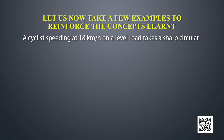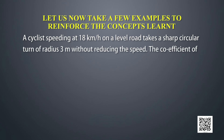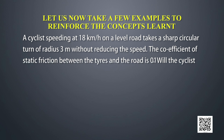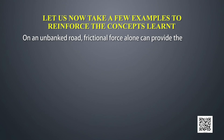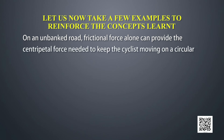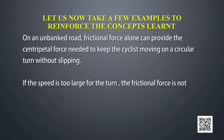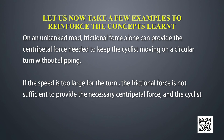Example 1: A cyclist speeding at 18 km/h on a level road takes a sharp circular turn of radius 3 m without reducing speed. The coefficient of static friction between tires and road is 0.1. Will the cyclist slip? On an unbanked road, friction alone provides the centripetal force. If speed exceeds the maximum safe limit, friction will not be sufficient and the cyclist will slip.